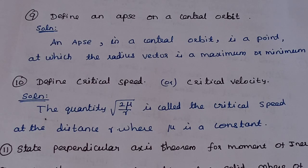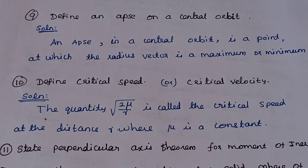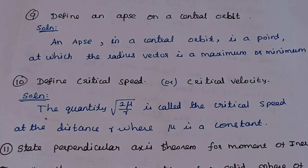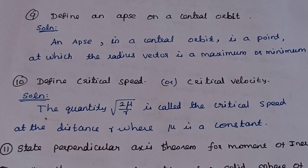Define critical speed. Critical speed and critical velocity refer to the magnitude (scalar form). The quantity √(2μ/r) is called the critical speed at distance r, where μ is a constant.